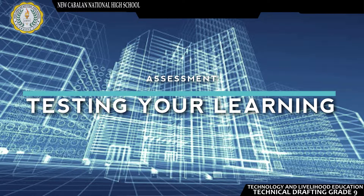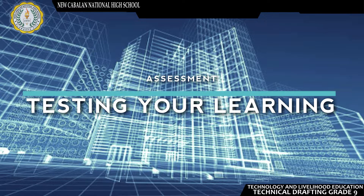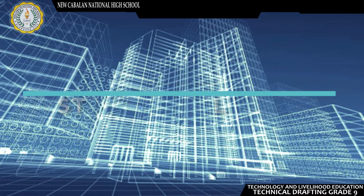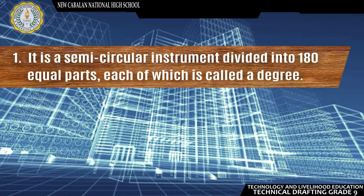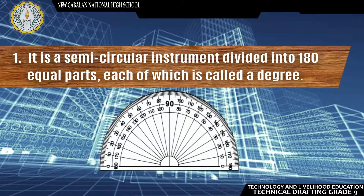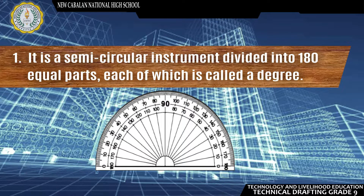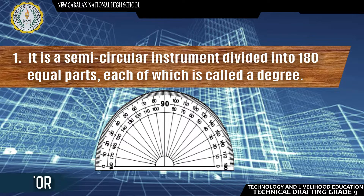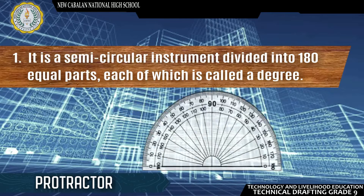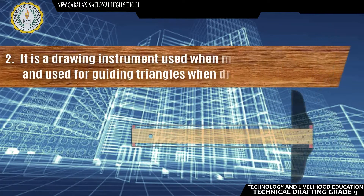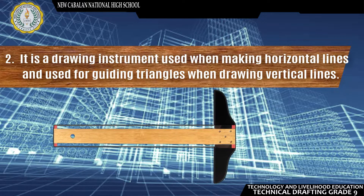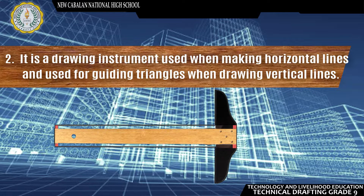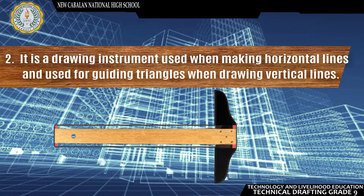Now it's time to test your learning. Identify the names of the given tools and equipment to be shown. Number 1: It is a semi-circular instrument divided into 180 equal parts, each of which is called a degree. The correct name is Protractor. Number 2: It is a drawing instrument used when making horizontal lines and used for guiding triangles when drawing vertical lines. The correct name is T-square.